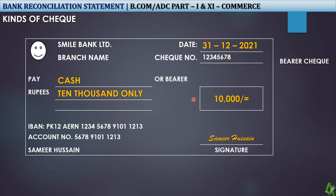Now you are at home and you check your pocket — the check is not there. You call the bank and say, 'Sir, I issued check number 1-2-3-4-5-6-7-8, please check.' The banker says, 'Yes sir, we have paid 10,000 rupees.' You say okay, because the bank is not wrong and it is not your fault either — the payment has been done and nothing can be done now.